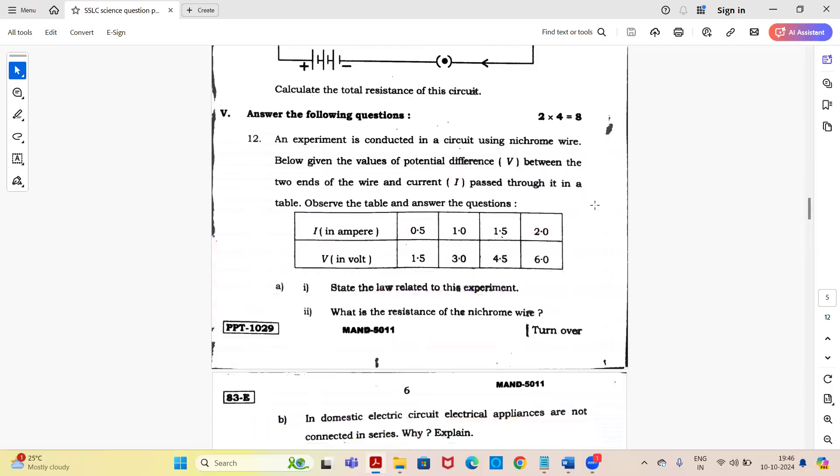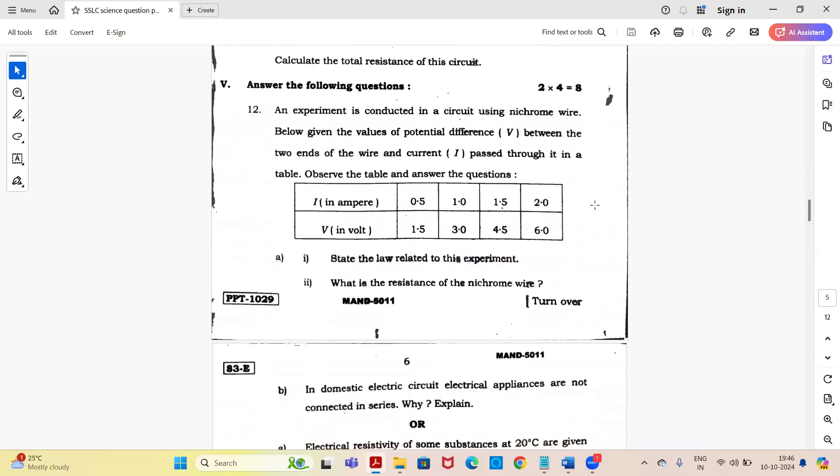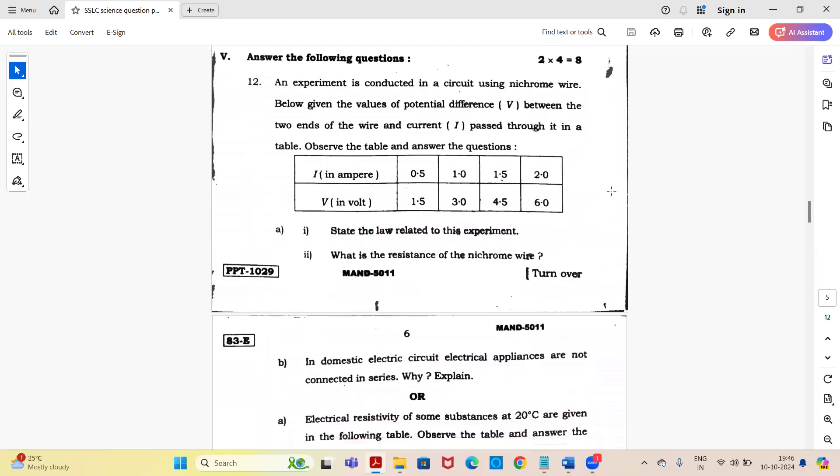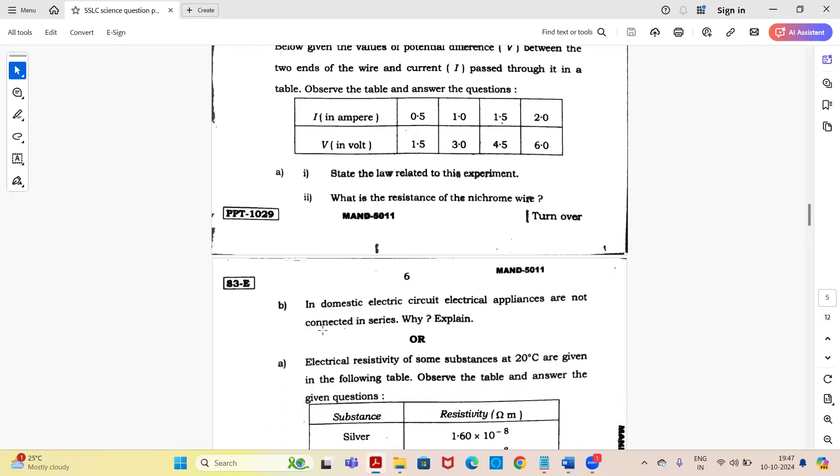Next main, answer the following question for eight marks. An experiment is conducted in a circuit using nichrome wire. Below given the values of potential difference V between two ends of the wire and current I passing through it in a table. Observe the table and answer the questions. State the law related to this experiment. What is the resistance of the nichrome wire? In domestic electric circuit, electrical appliances are not connected in series, why? Explain.